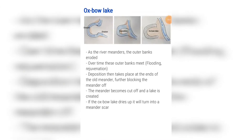The next landform is an oxbow lake. As the river meanders, the outer banks erode as you can see in the first picture. Over time these outer banks meet, as shown in the second picture. Flooding and rejuvenation speed up this process, as the river with extra energy or more water wants to take the shortest route possible, cutting through the outer banks to join the other side and totally cutting off the meander.